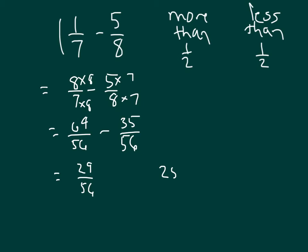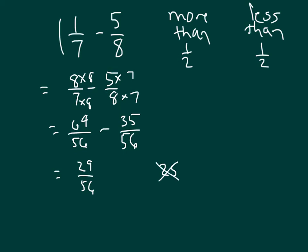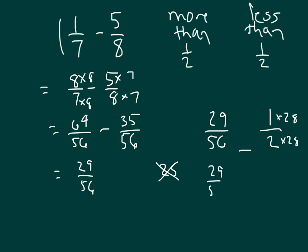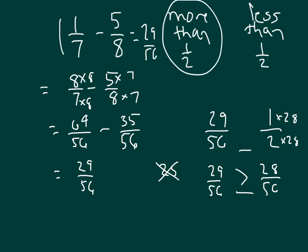To compare twenty-nine fifty-sixths with one-half, I need a common denominator. Let's get to fifty-six, since I already have fifty-six. One-half multiplied by twenty-eight — which is half of fifty-six — gives twenty-eight fifty-sixths. I'm comparing twenty-nine fifty-sixths with twenty-eight fifty-sixths, and I know twenty-nine fifty-sixths is bigger. So one-and-one-seventh minus five-eighths is more than one-half — just slightly more. In fact, it's only one fifty-sixth more than one-half.